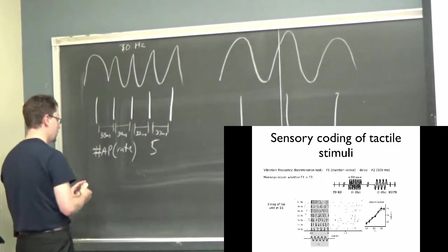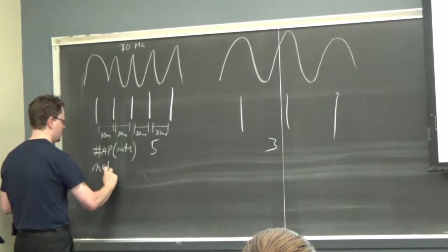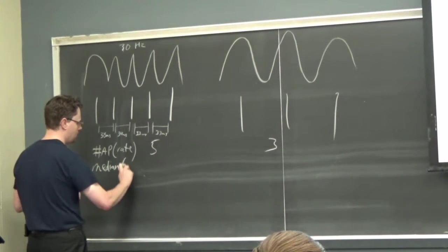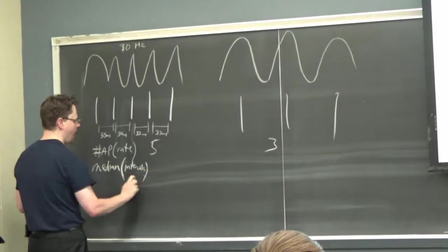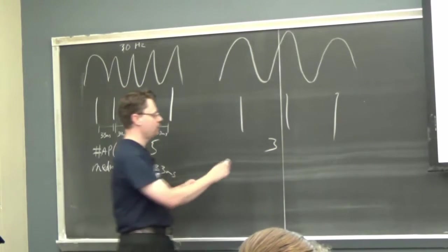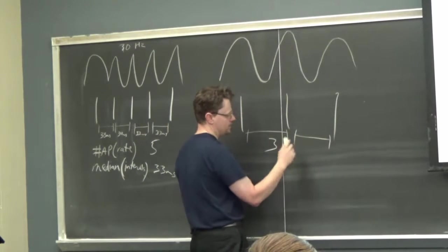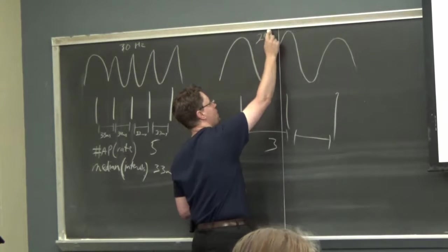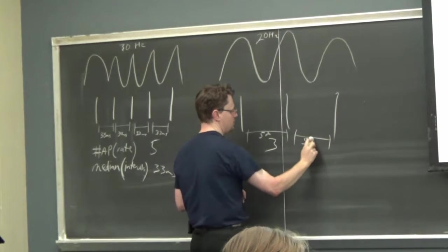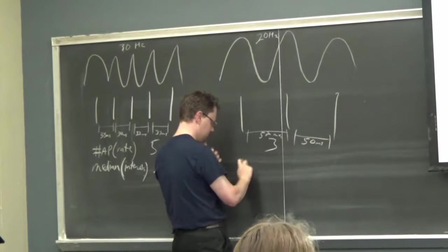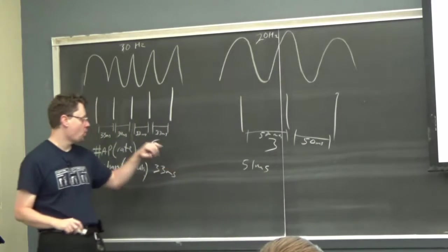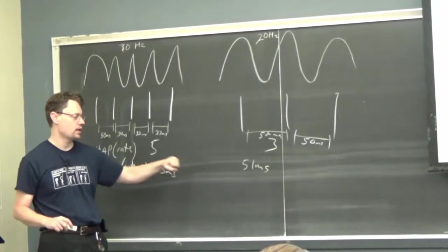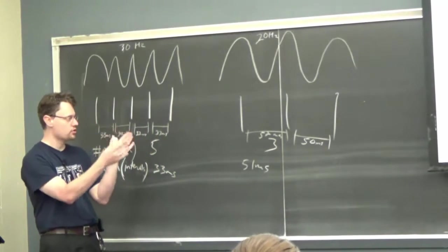We could tell the computer all the intervals, but that's cheating because it reveals how many spikes there were. Instead, we just give the computer the median inter-spike interval — and we'll see why the median in a moment. So the median of all the intervals might be 33 milliseconds for 30 Hz stimulation. For a 20 Hz stimulus, the median might be around 51 milliseconds. In one set of experiments, we give the computer the number of spikes; in another, we give it the median interval between spikes.